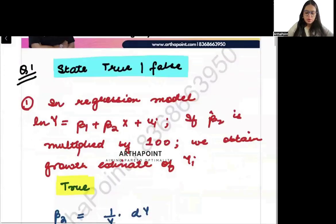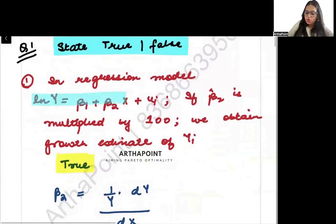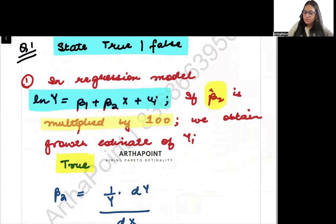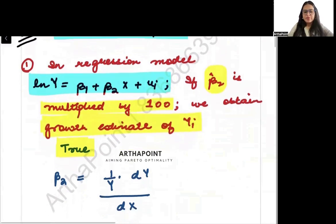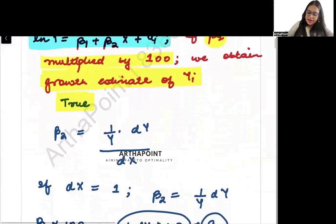The first statement says: in the regression model ln y = β₁ + β₂x + ui, if β̂₂ is multiplied by 100 we obtain the growth estimate of yi. Try to understand this statement better.